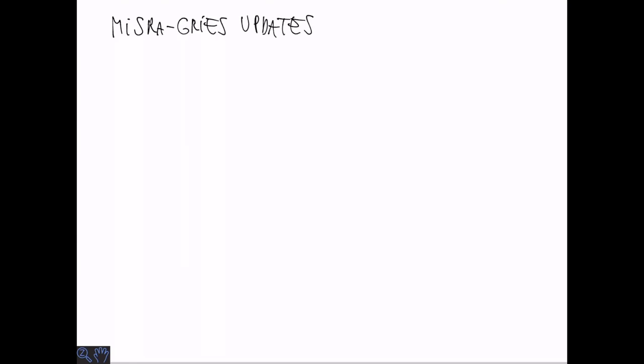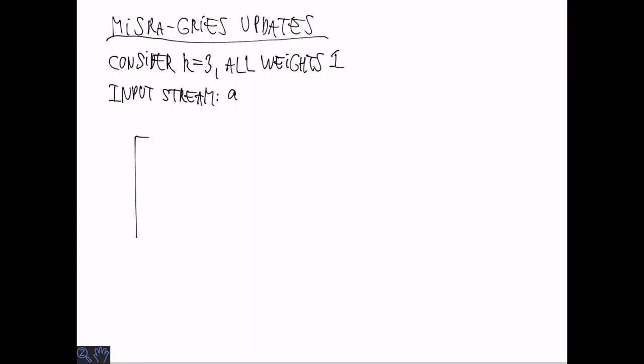Next let's look at how the Misra-Gries summary handles updates. We consider the case of K equals 3 and for simplicity all weights are equal to 1. Suppose the input stream starts with an A. The data structure consists of an array of items and corresponding counts. Let's call it T. Since there is space we simply insert A with a count of 1. Then we see B in the stream and it also is inserted with a count of 1. When we see A again we update the counter so that it's equal to 2. When we see C we insert it with a count of 1.